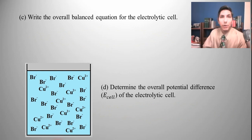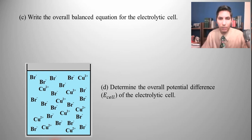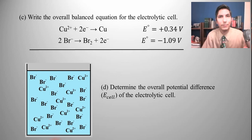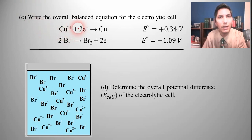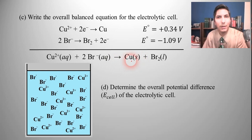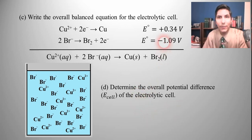Part C: write the overall balanced equation. We take those two selected half-reactions and add them together. The two electrons here cancel out with the two electrons on the other side, so no multiplication is needed — it works out perfectly. The result: copper-2 ions (aqueous) plus two bromide ions (aqueous) yield one copper atom (solid) and one molecule of bromine (liquid). For the overall potential difference, we add the two potentials: positive 0.34 plus negative 1.09 gives us negative 0.75 volts — negative because we're adding an external power source.